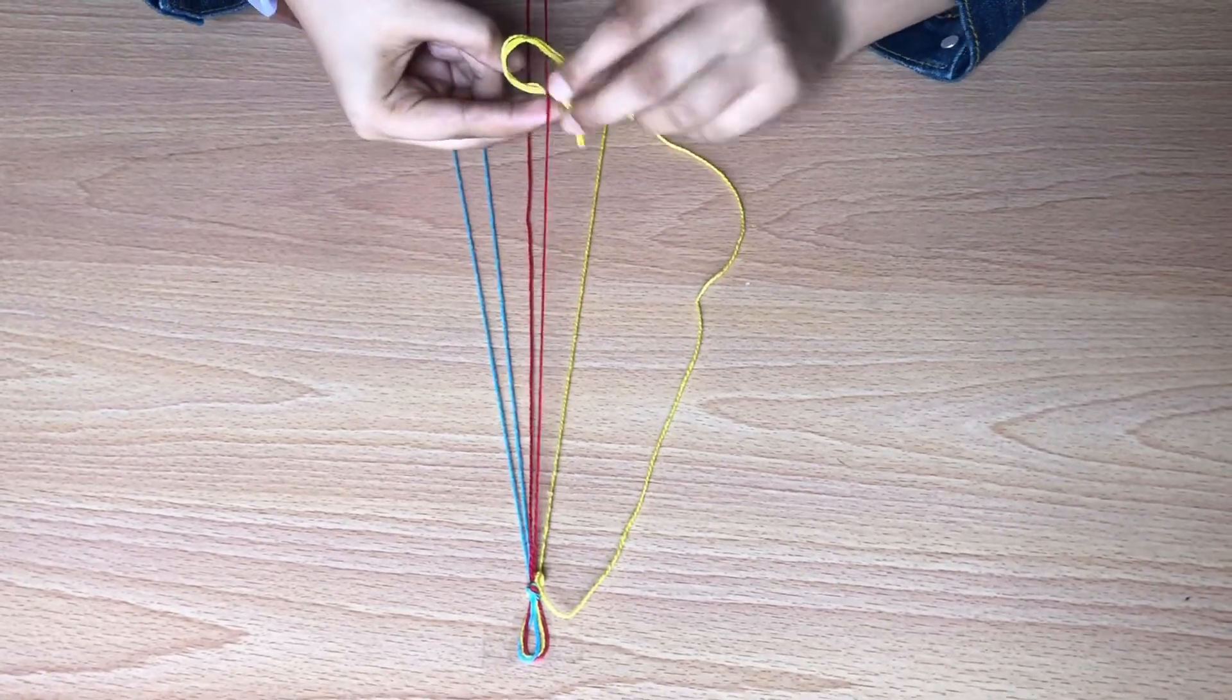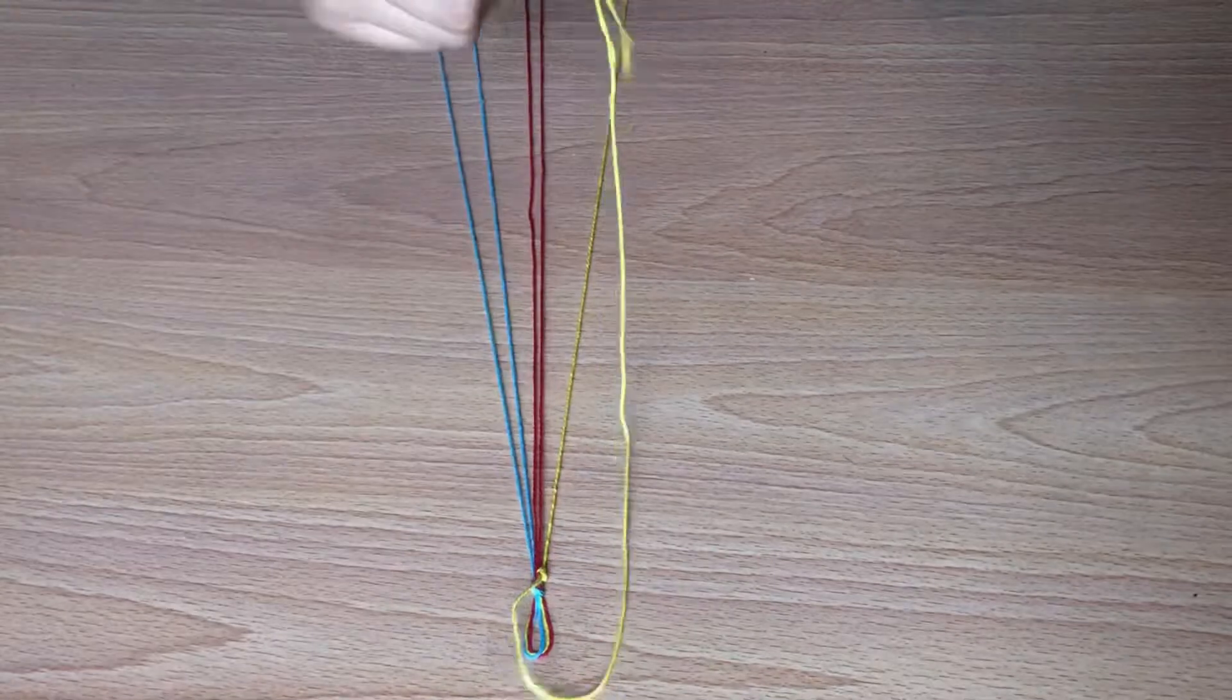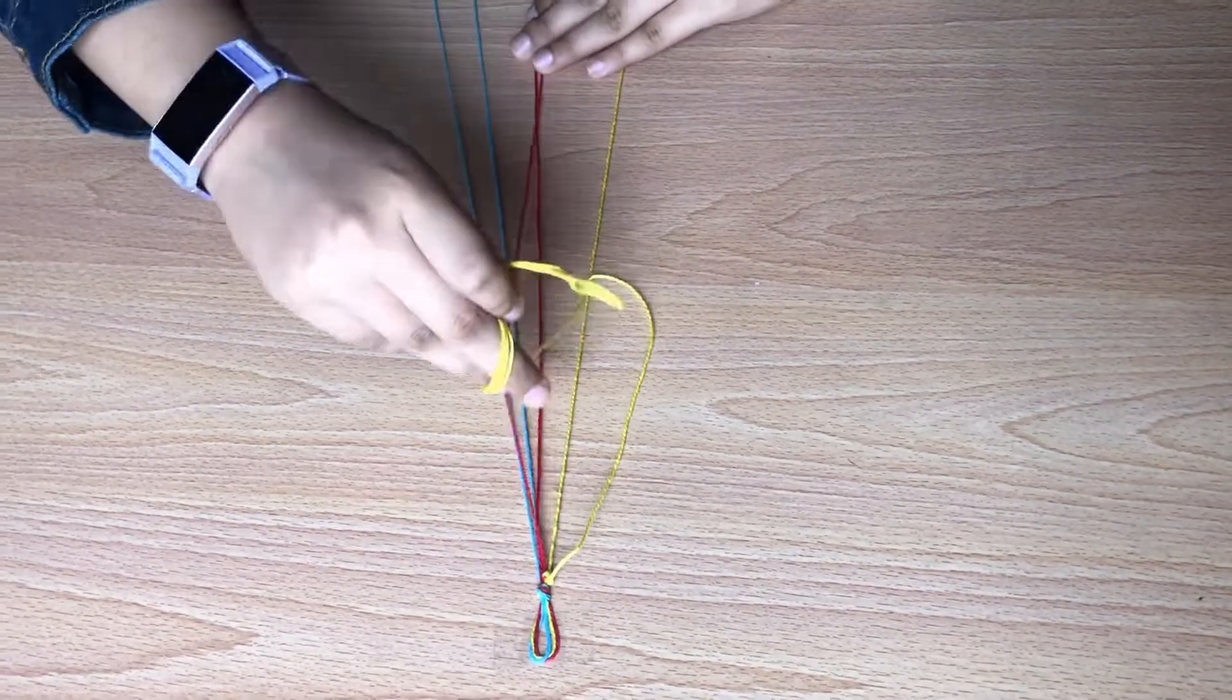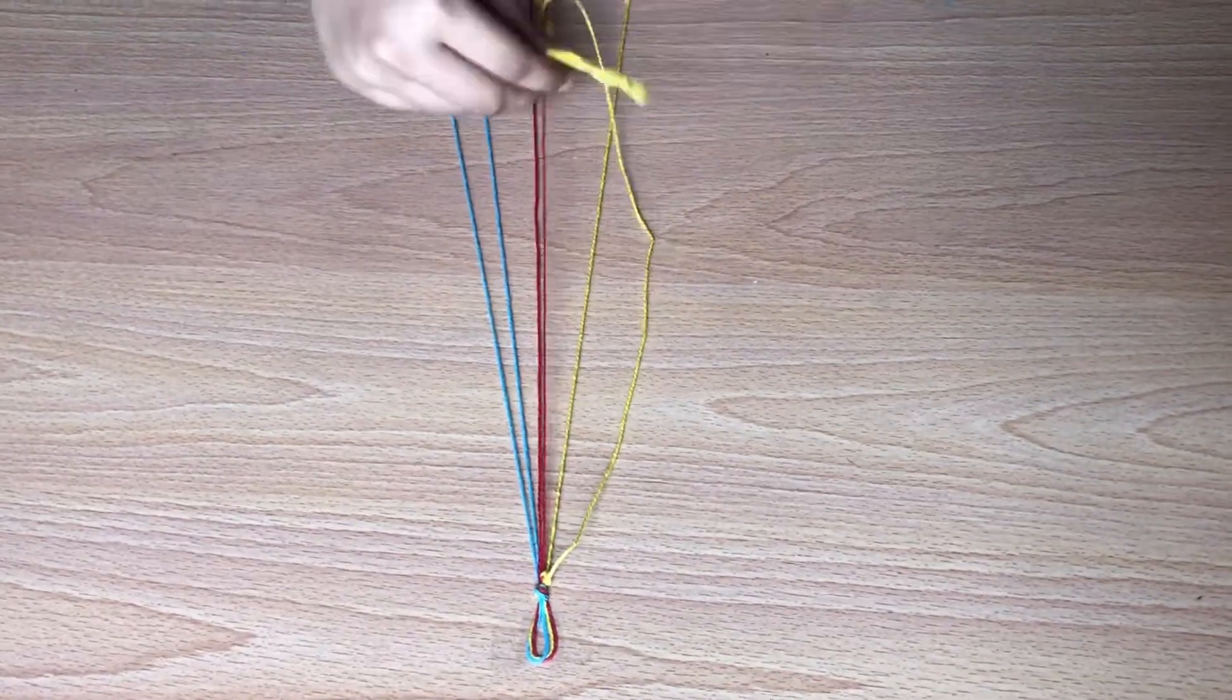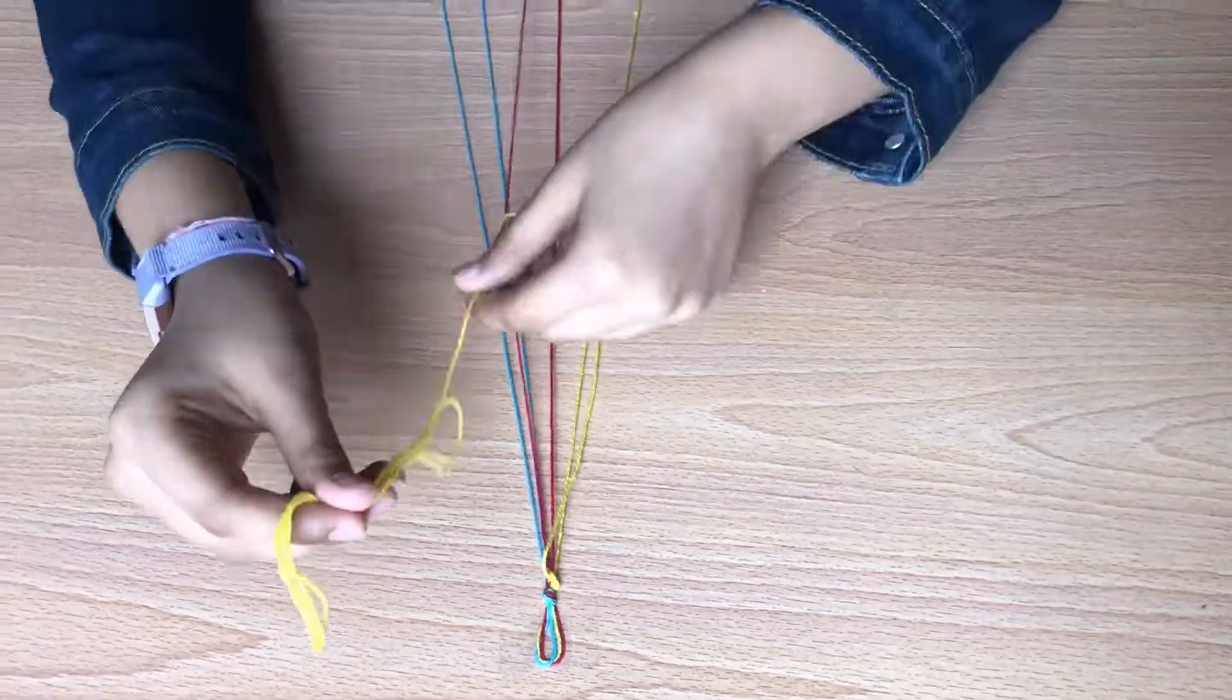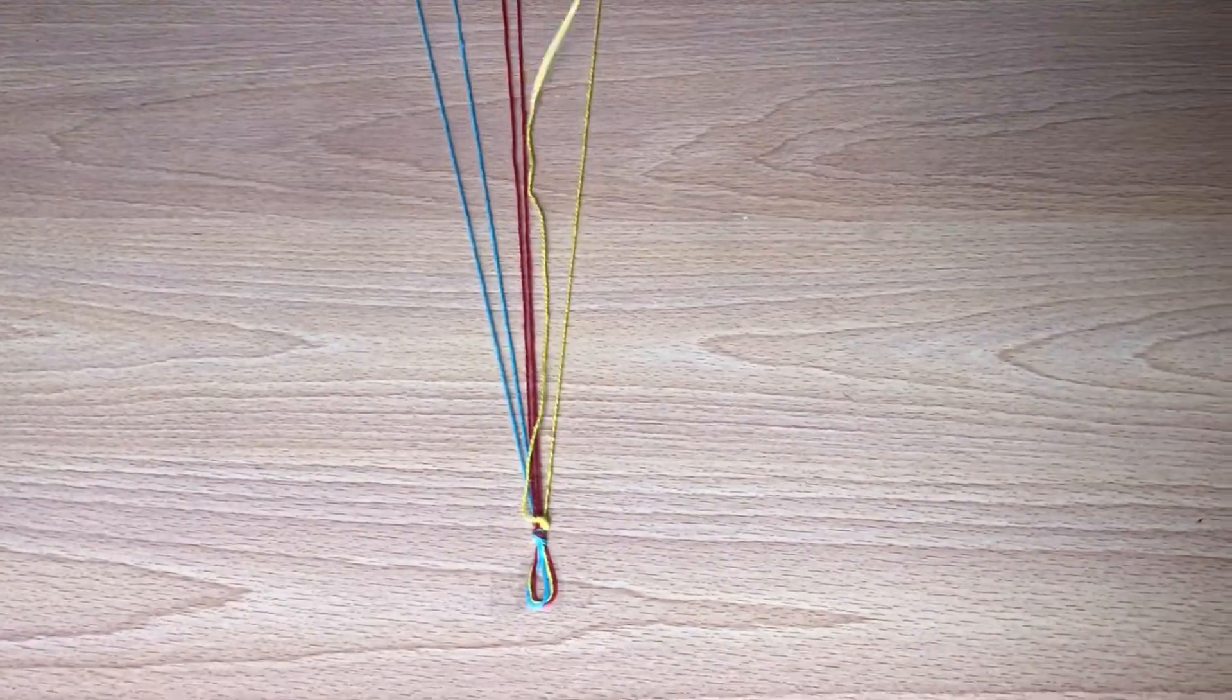Do the same for red, make four and knot. Keep doing that for all the strings. Also as you can see I've folded the end of the thread that I'm using. You could also do that if you think that the thread is too long to hold.